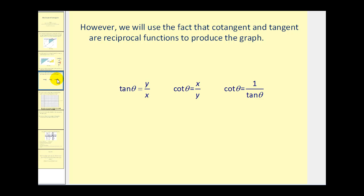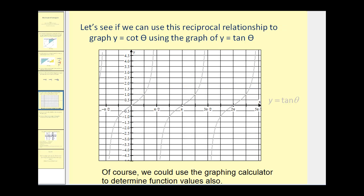To graph this by hand, we're going to use the fact that cotangent and tangent are reciprocal functions to produce the graph. We'll assume we can graph the tangent function, and from that we'll graph the cotangent function by taking reciprocal values of tangent theta. In gray we have tangent theta already graphed. We're going to pick some key values on the tangent function, find the reciprocal values, and plot those for cotangent.